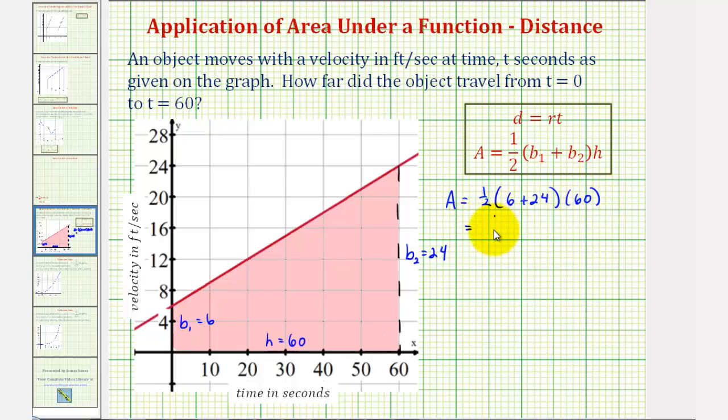So we'd have one-half times thirty times sixty. Well, one-half times thirty would be fifteen, so we have fifteen times sixty, which is equal to nine hundred.